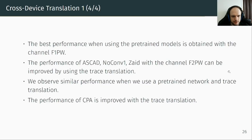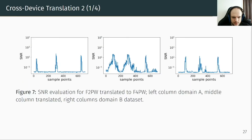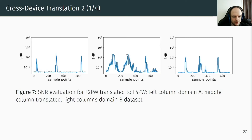This is the summary of the first cross-device translation. Third, we investigated other scenarios of cross-device translation. This graph shows the SNR evaluation for F2 power translated to F4 power. On the left is the SNR from F2 power; in the middle, the translated traces; on the right, F4 power. We observe that F2 power has higher SNR than F4 power — this is the context where the GAN translates from a large to a smaller SNR. The GAN successfully retrieved the three main leakage positions of F4 power and provides higher SNR than F4 power.